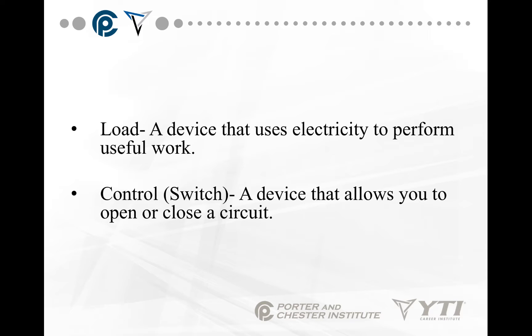A control, or switch, is a device that allows you to open or close a circuit. A closed circuit allows electricity to flow. An open circuit has a gap somewhere in the circuit that does not allow electricity to flow — so an open circuit does not allow the light bulb to come on, while a closed circuit does. It is exactly opposite of a water valve: an open valve allows water to flow, but an open electrical circuit does not allow electricity to flow.